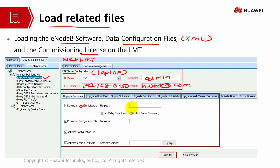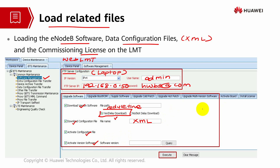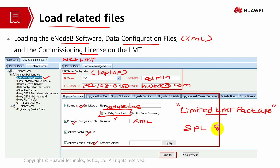You will download the version software — download it first. Set 'delay download' to 'yes' to reduce the time spent during the commissioning process. Download the configuration file that you have already saved earlier, then activate the software. When the software is downloaded and activated, you will only have the limited LMT package. It will take about four hours to become complete. If after four hours the message is still 'limited', you can use the command SPL software to make it a complete package.